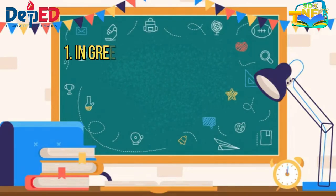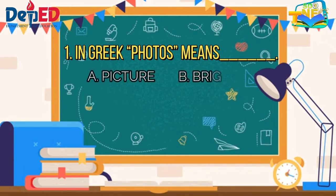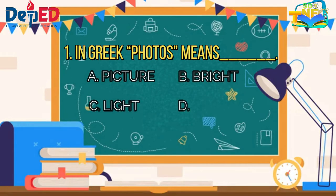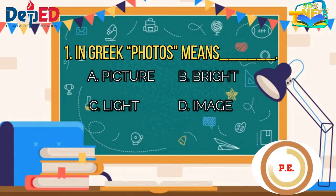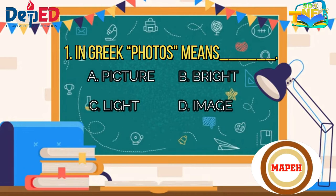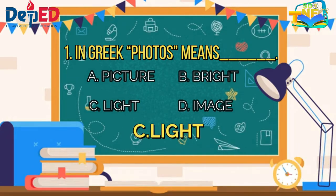Question 1: In Greek, 'photos' means blank. A. picture, B. bright, C. light, D. image. The correct answer is letter C.